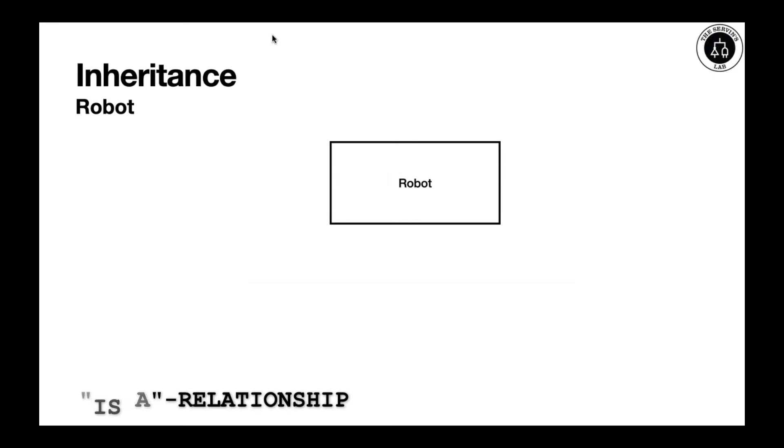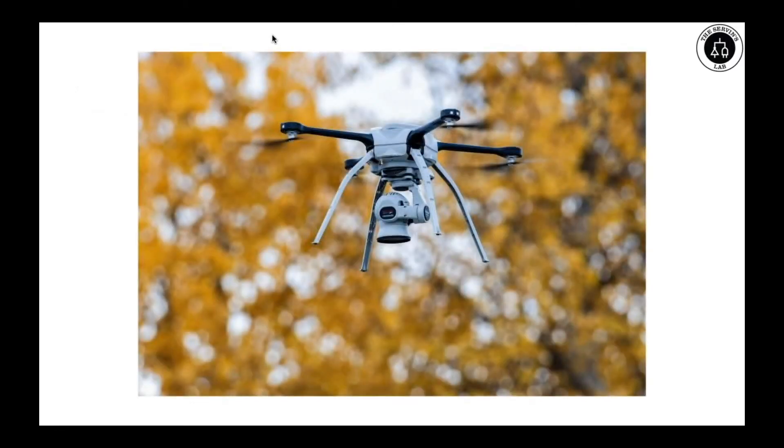In our example, we're going to have our superclass robot, but we're going to extend it to a different feature. We're going to create a more sophisticated robot called a drone. A drone is a robot, but also has more features.